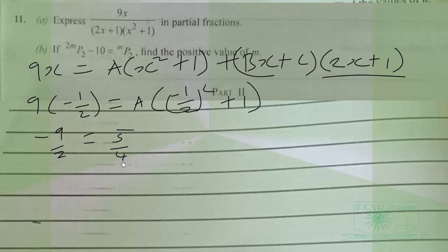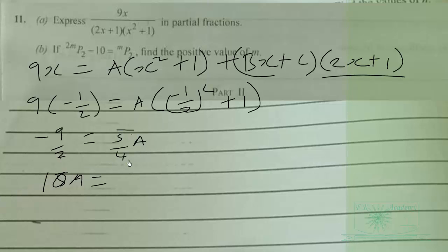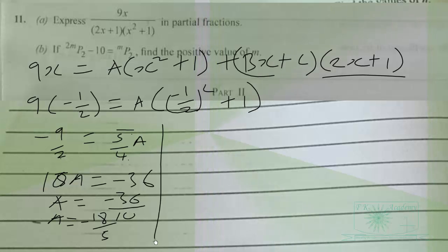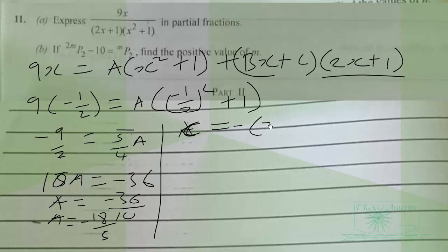Cross multiplying gives 5A = −36/2 × ... so we get 10A = −36, meaning A = −36/10 = −18/5. Since A = −C, then C = −A = 18/5.